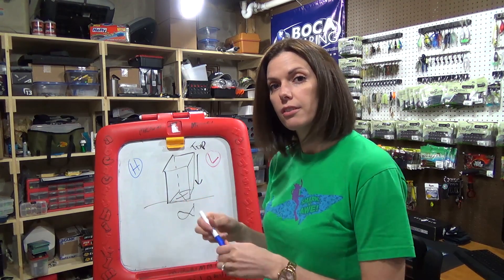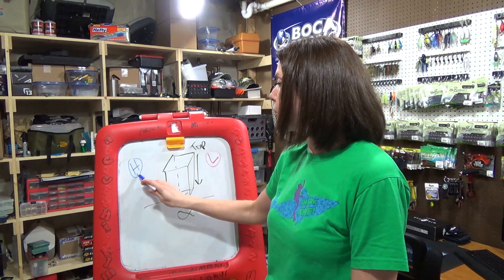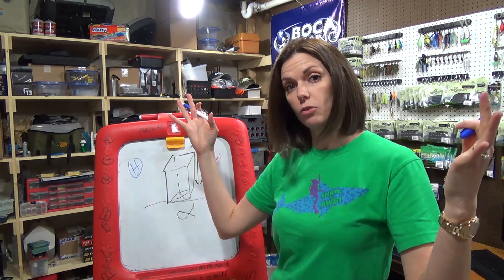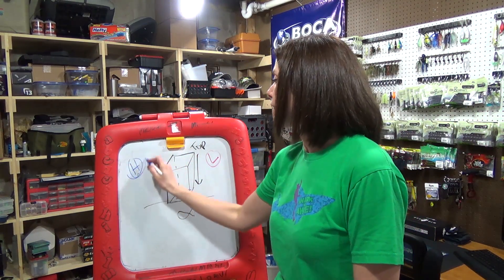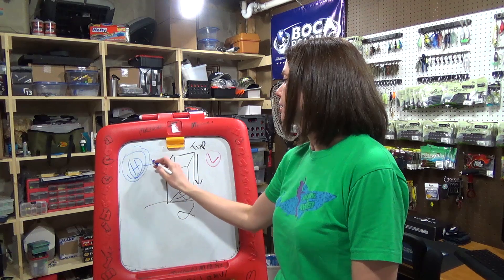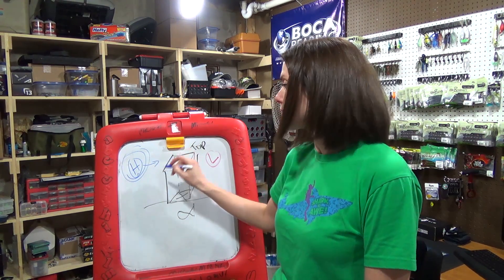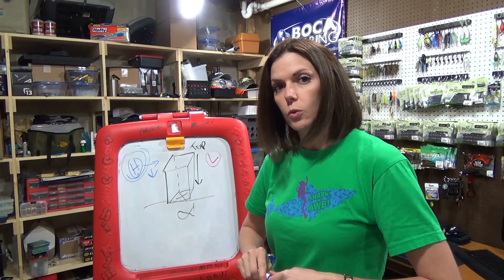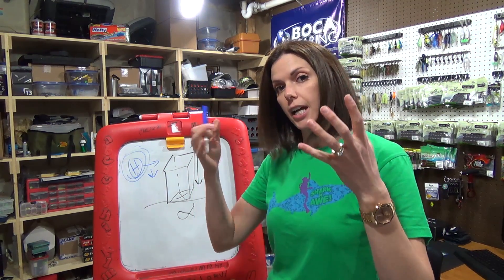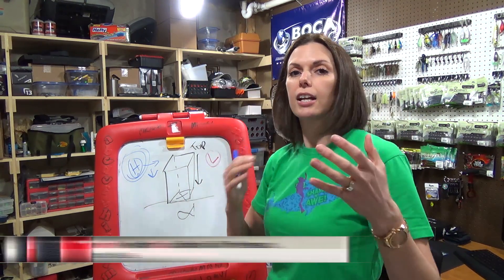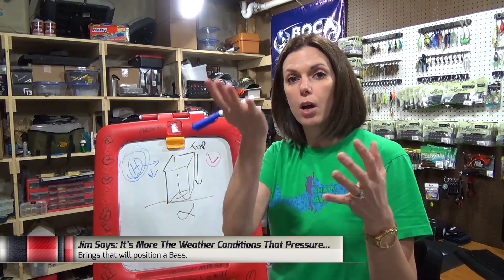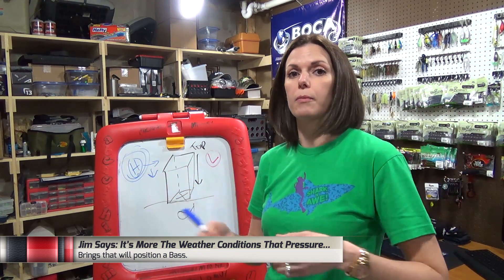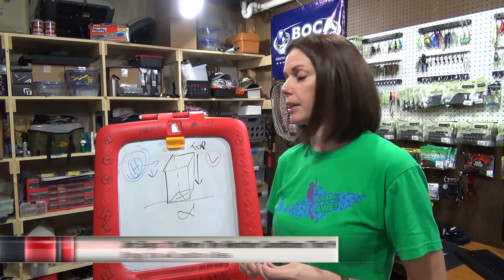The high pressure center is the point at which there's the highest pressure compared to the areas around it. As you move out from that center, the pressure is going to gradually decrease. In that center, you have sinking air, and that sinking air does not allow for the upward motion which is required for clouds to form or for precipitation to happen.